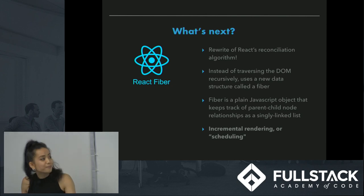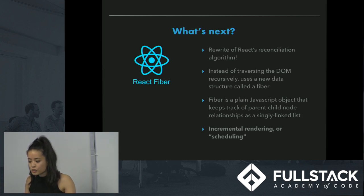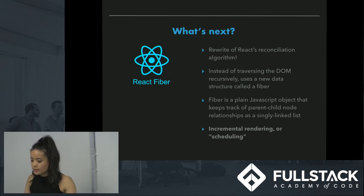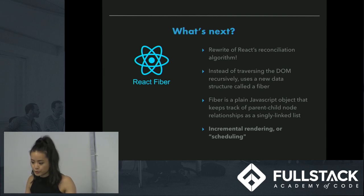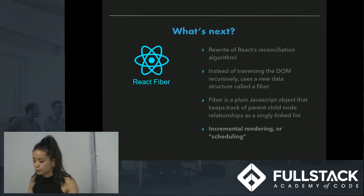What's next? That's React Fiber, which is a rewrite of React's reconciliation algorithm that came out earlier this summer. Instead of traversing the DOM recursively breadth-first, it uses a new data structure called a fiber, which is a plain JavaScript object that keeps track of parent-child relationships in a singly linked list. The hallmark feature is something called incremental rendering or scheduling. Right now in React, an entire subtree is re-rendered immediately on an update. But with scheduling, work is broken up into chunks and changes are committed only when ready, so that Fiber can prioritize more important work — like responding to animation updates — over less important things like background updates.